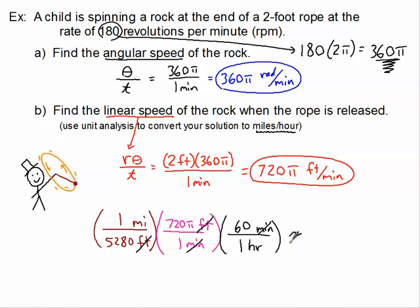So all I need to do is crunch all these numbers together. I've got 1 times 720 pi times 60 all divided by 1 times 1 times 5,280. So when I do that in the calculator, I'm going to approximate my miles per hour. And that is approximately 25.704 miles per hour. So that is a pretty fast rock.